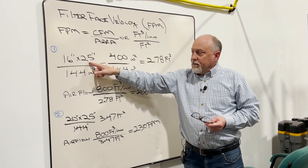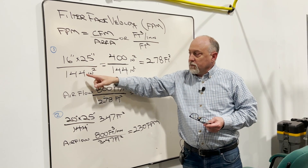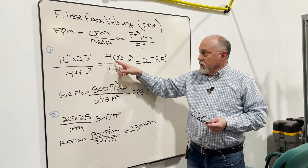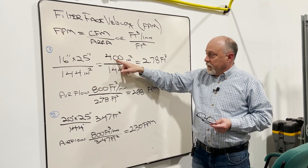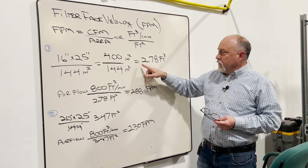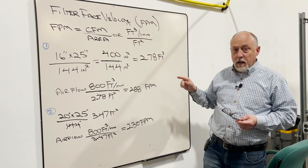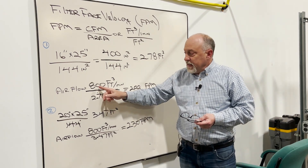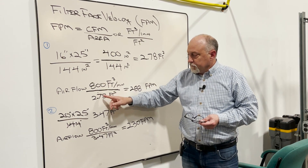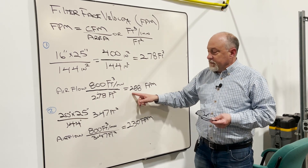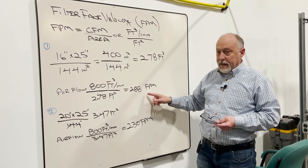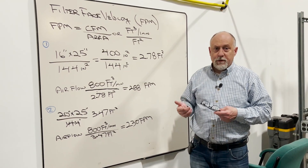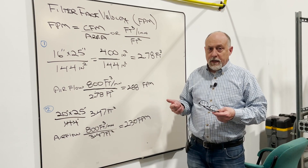So if we were to take a 16 by 25 filter, we have to first convert it to square feet by dividing by 144 inches squared. So 16 by 25 is 400, divided by 144 is 2.78 feet squared of filter media — that's all that is, it's just square feet of filter area. We take that 800 CFM divided by 2.78 feet, that gives us 288 feet per minute of velocity going across the filter. So that falls in that range of 250 to 500 — that ideal range is perfect.